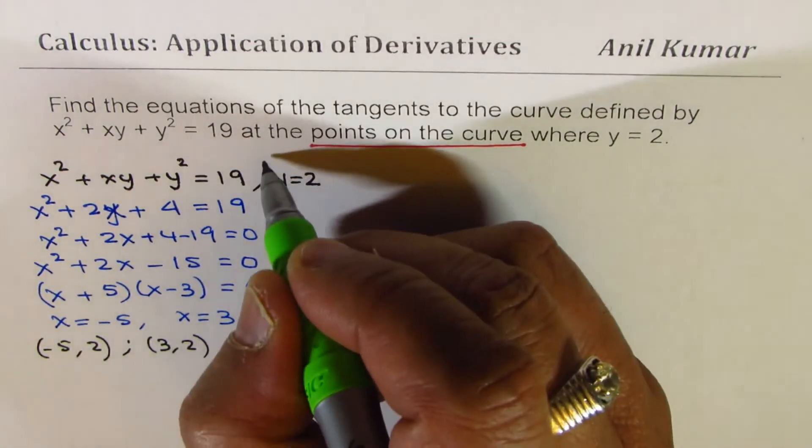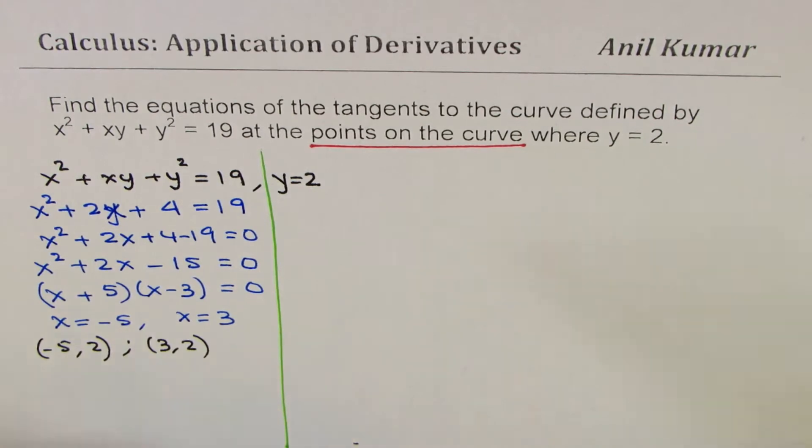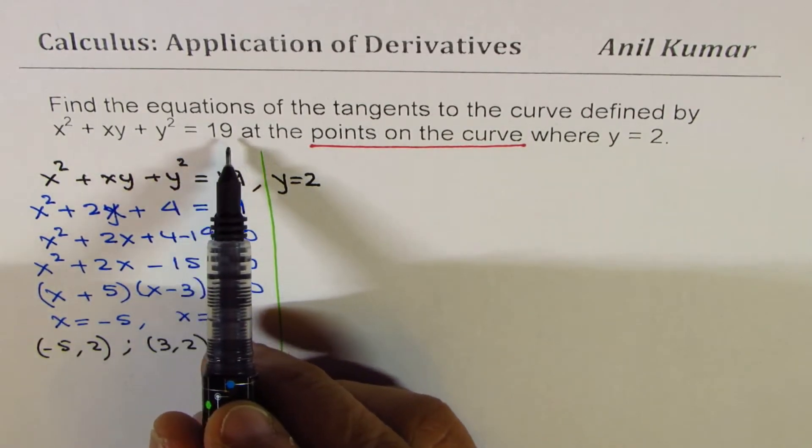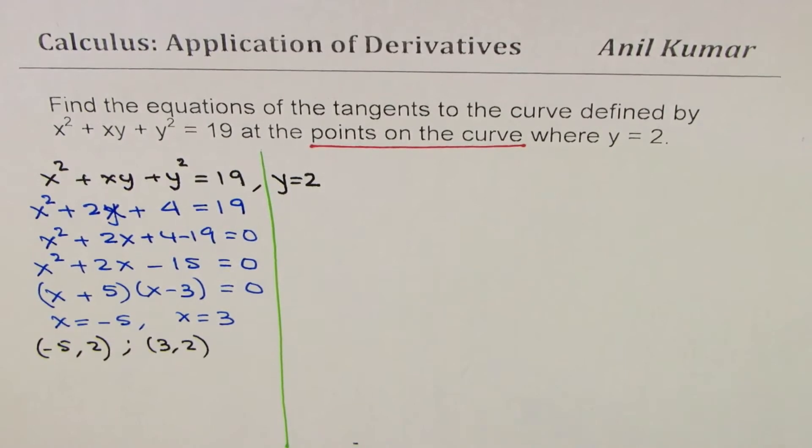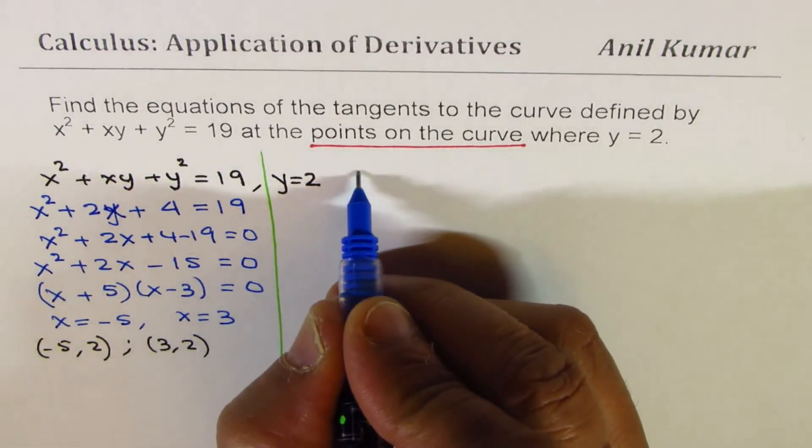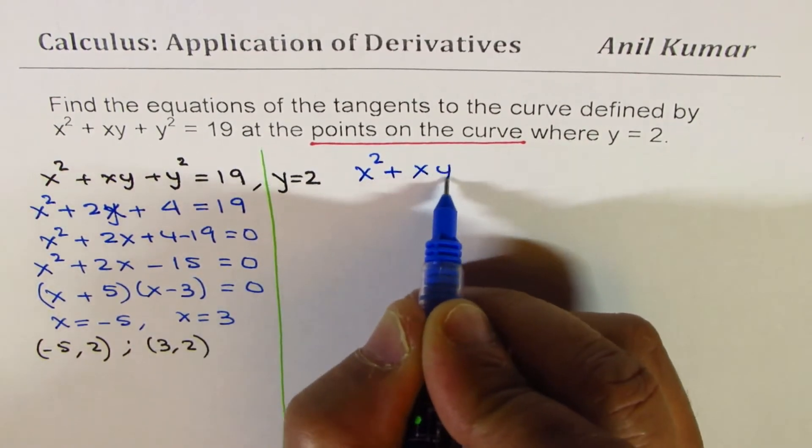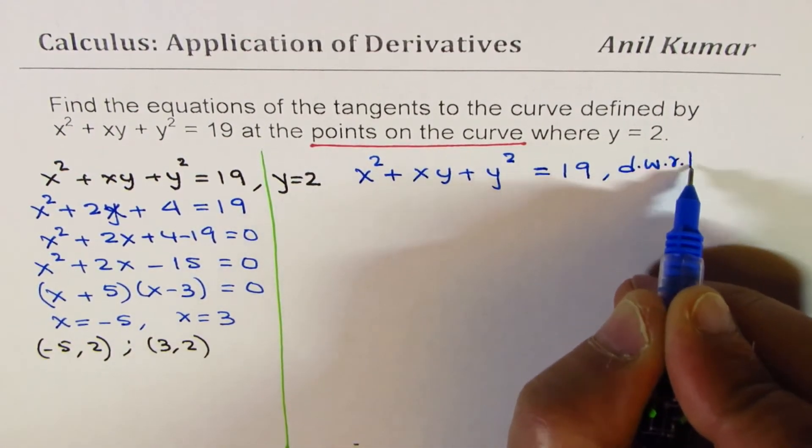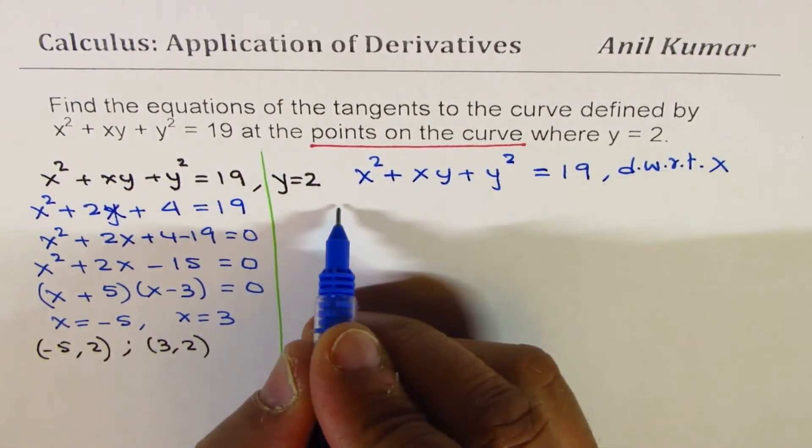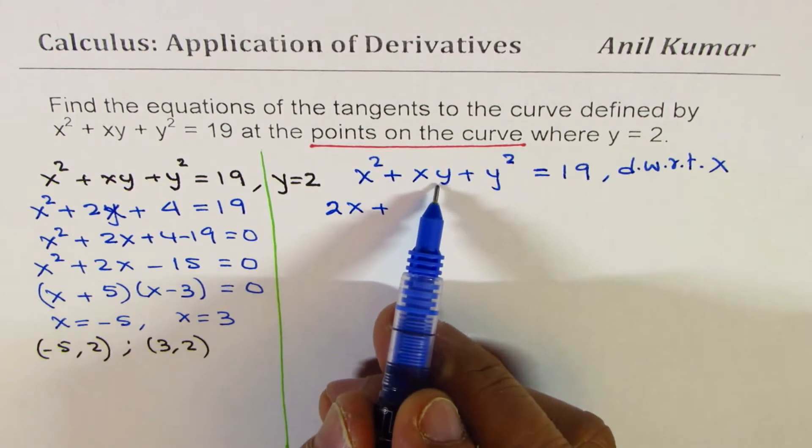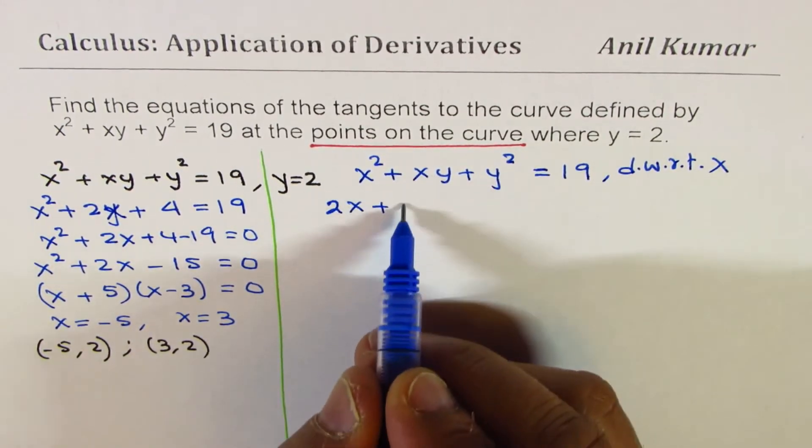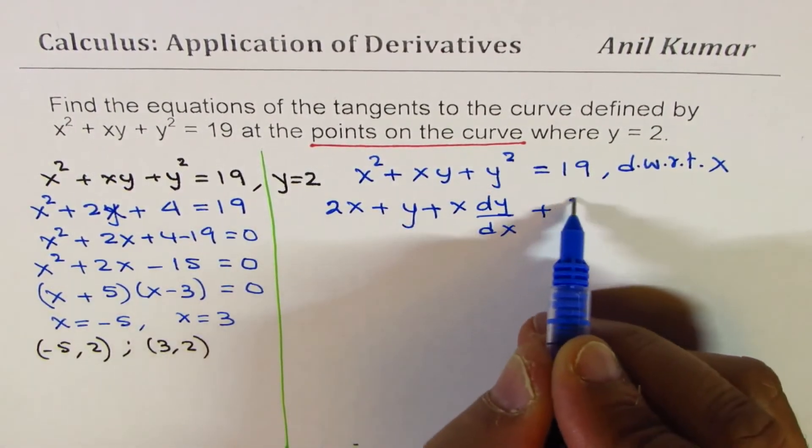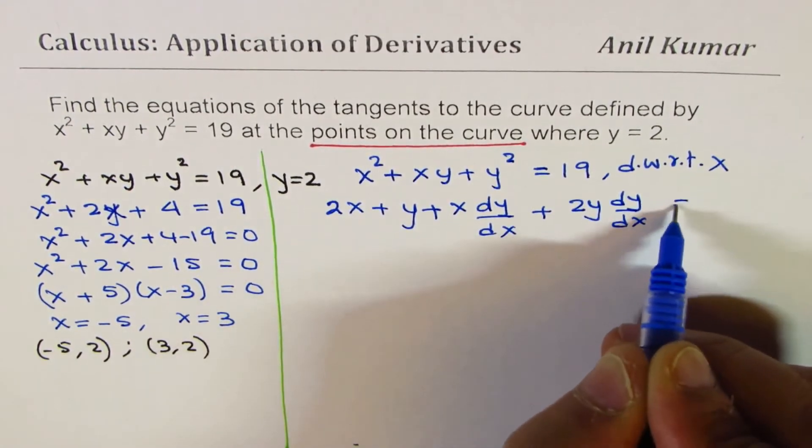Now, let's find the derivative. The function is x² + xy + y² = 19. So, let me write down. So, we have x² + xy + y² = 19. Let us differentiate with respect to x on both the sides. So, when we do that, we get 2x plus, here we are going to apply the product rule, derivative of x is 1. So, we get y + x·dy/dx + 2y·dy/dx = 0.